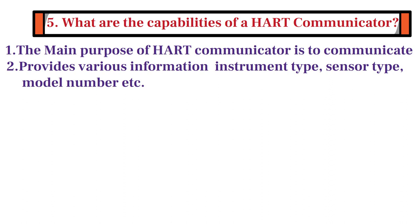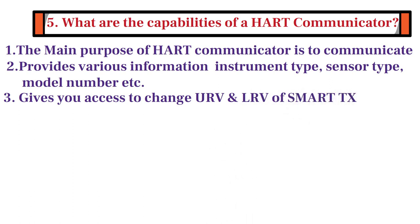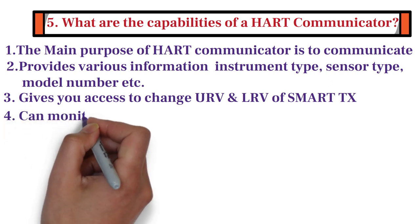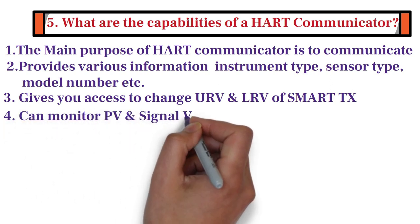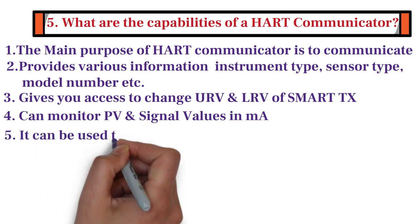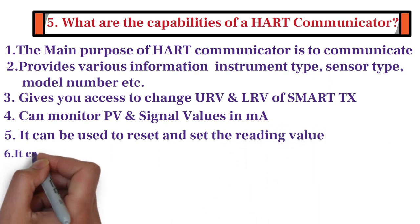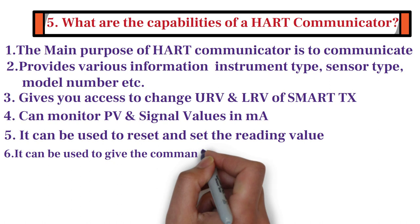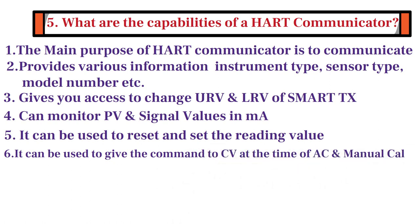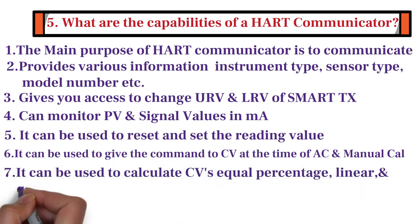Third capability is that HART gives you access to change upper range value and lower range value of smart transmitter. In addition to this, with the help of HART communicator, you can monitor process variable and signal values in milliamps. HART communicator can also be used to reset and set the reading value. Furthermore, HART communicator can also be used to give the command to control valve at the time of auto and manual calibration. Last but not the least, it can also be used to calculate control valve's equal percentage, linear, and quick opening.